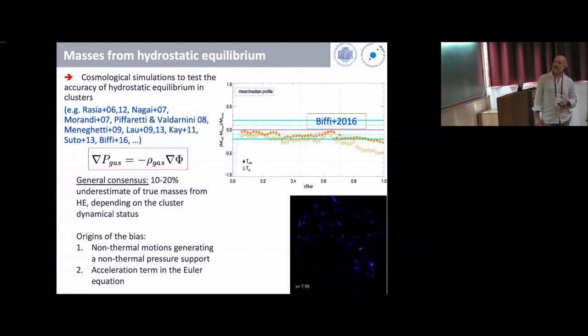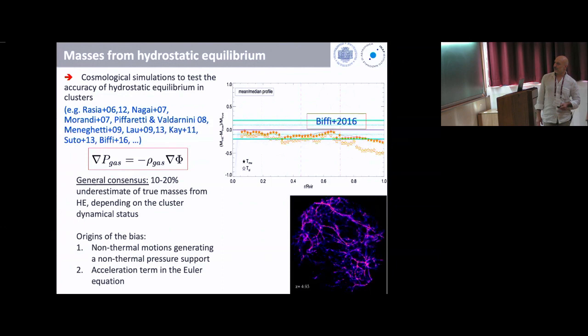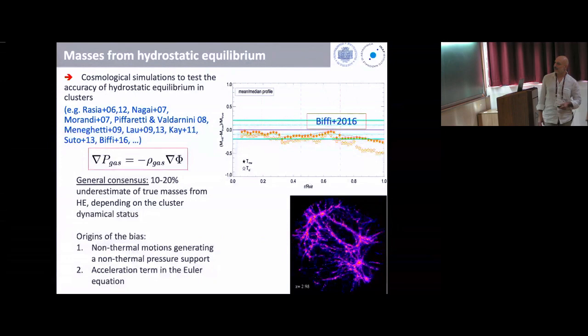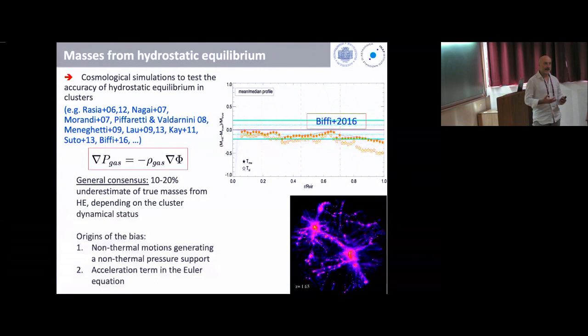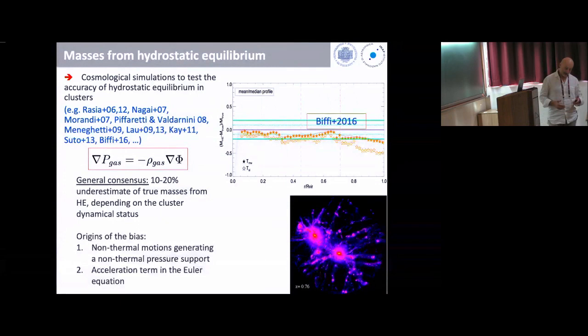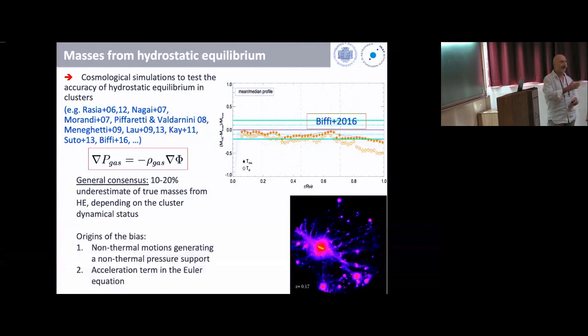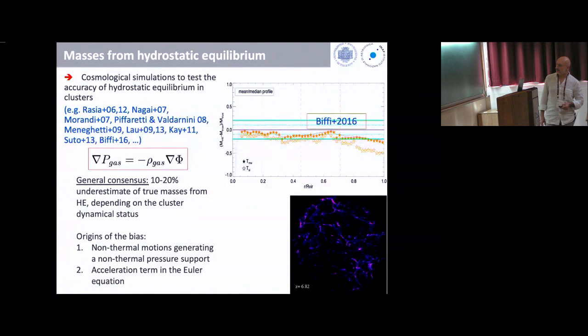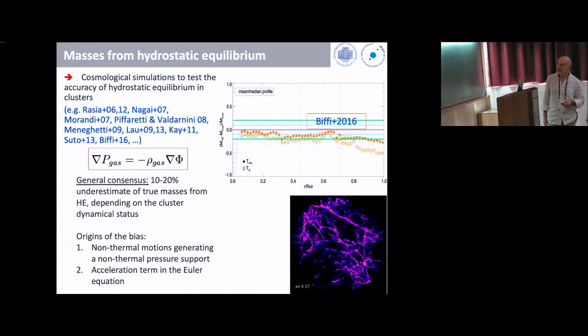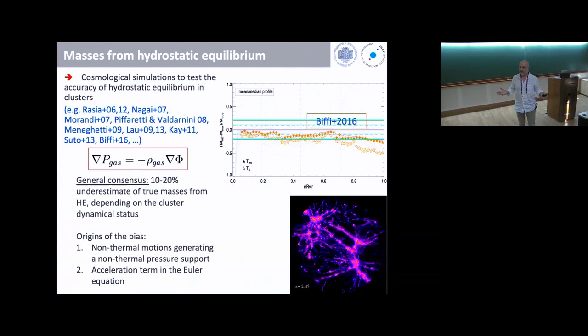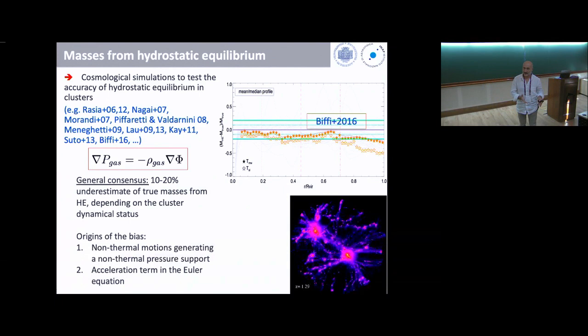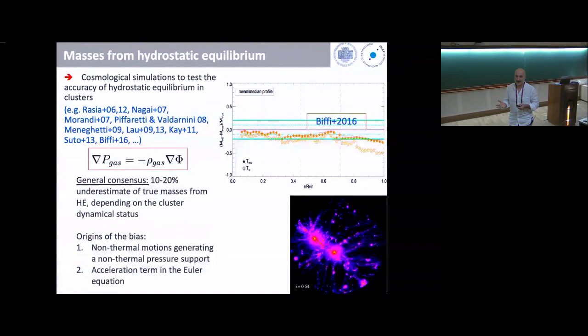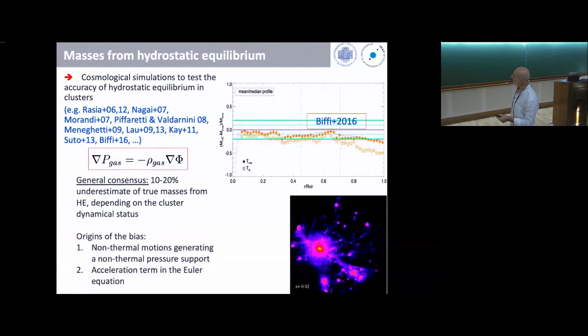Masses from hydrostatic equilibrium. This simulation movie highlights that galaxy cluster formation is a highly dynamical process — not something static. It's not like the Jeans equation in the time-independent approximation, or the Euler equation with the acceleration term set to zero. In simulations we can address the violation of hydrostatic equilibrium because we can measure gas density and temperature profiles precisely, apply the hydrostatic equilibrium equation, derive a mass, and compare with the true mass.